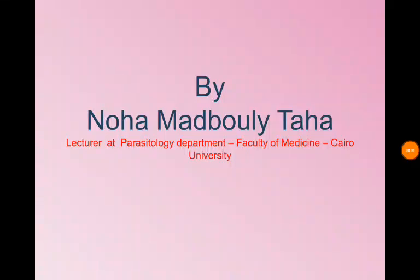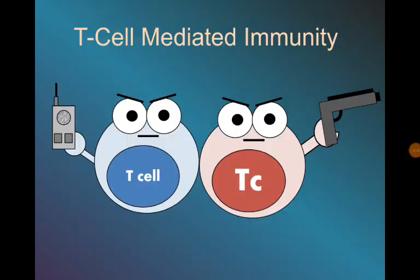Hello everyone! In this video, we will discuss cell-mediated immunity. The acquired immune response has two main arms: the cell-mediated immunity mediated by T-lymphocytes and the humoral immunity mediated by B-lymphocytes.